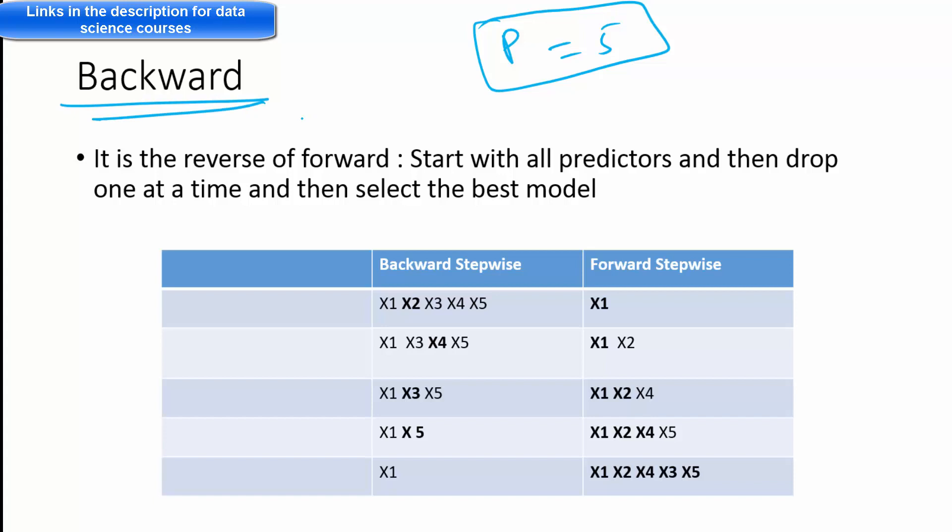Then backward stepwise regression. So this is one type of selection method, variable selection method, which is the reverse of forward. You start with all predictors and then you drop one at a time.